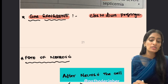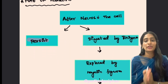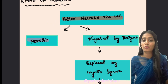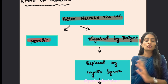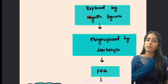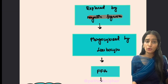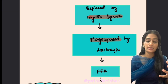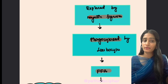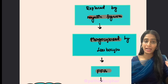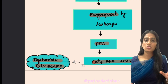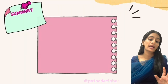The fate of necrosis: once a cell undergoes necrosis, the debris will either persist or be digested by enzymes. It will be replaced by myelin figures, phagocytized by leukocytes, generating free fatty acids, which combine with calcium and minerals to lead to dystrophic calcification. Gas gangrene is caused by Clostridium perfringens.